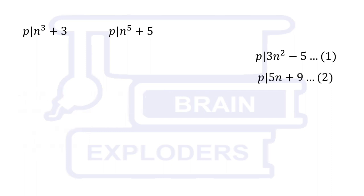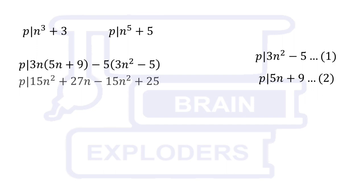Since p divides 3n squared minus 5 and 5n plus 9, it implies that p also divides 3n times 5n plus 9 minus 5 times 3n squared minus 5. That means p divides 27n plus 25.